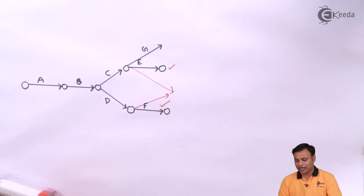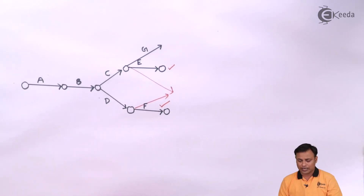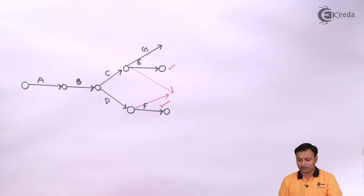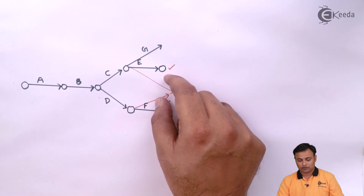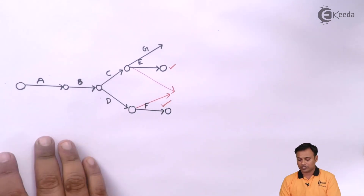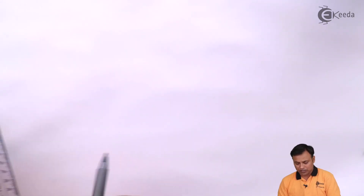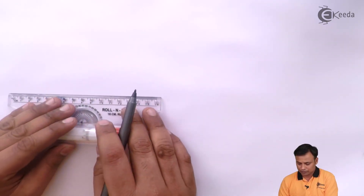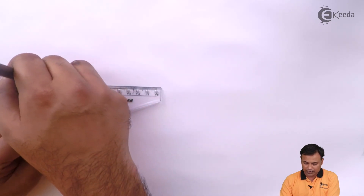Remember, friends: draw the diagram with a pencil first, then produce the fair diagram once you have the rough one accurate. We will join E and F, and from E and F we get H. This is all from the perspective of a student — understanding what problems a student faces while drawing a network diagram.